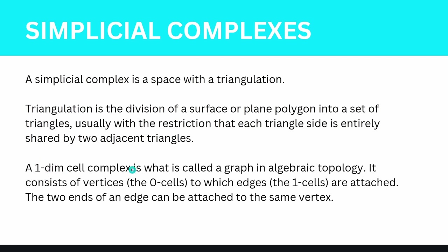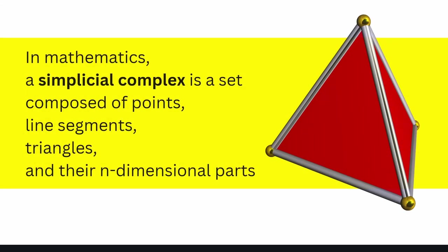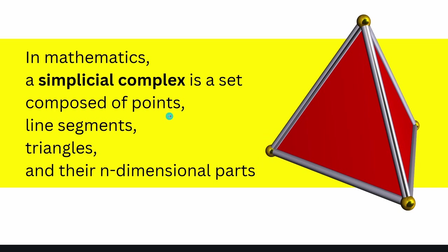A one-dimensional cell complex is a graph in algebraic topology — it consists of vertices (zero-cells) and edges (one-cells). A simplicial complex is a set composed of points/vertices, line segments (our edges connecting two vertices), triangles (a new two-dimensional surface space between three edges), and volume elements — the n-dimensional parts, including the volume of a tetrahedron. The underlying spaces are more complex mathematical topological spaces you can perform mathematics on.